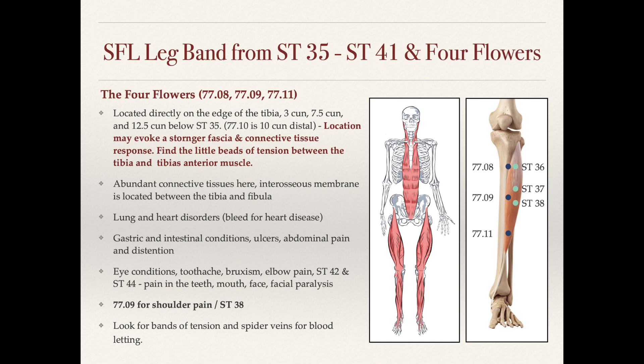The point locations are fairly similar to what we already know. The first point is similar to stomach 36 — it's three sun below the knee, below the point stomach 35, but again it's on the edge of the tibia. The point 77.09 is seven and a half sun below the eye of the lateral knee. And then 77.11 is 12.5 sun below stomach 35. Now 77.10 is 10 sun distal from stomach 35, and I think this is where we can easily get confused, because they're called the four flowers but they're needled as a group of three.